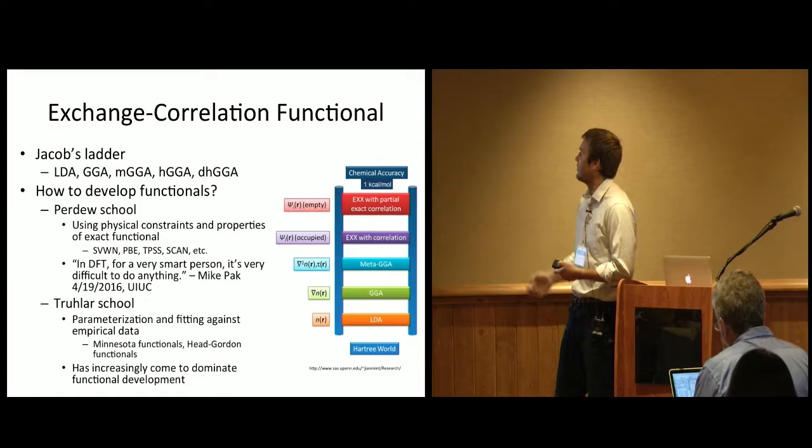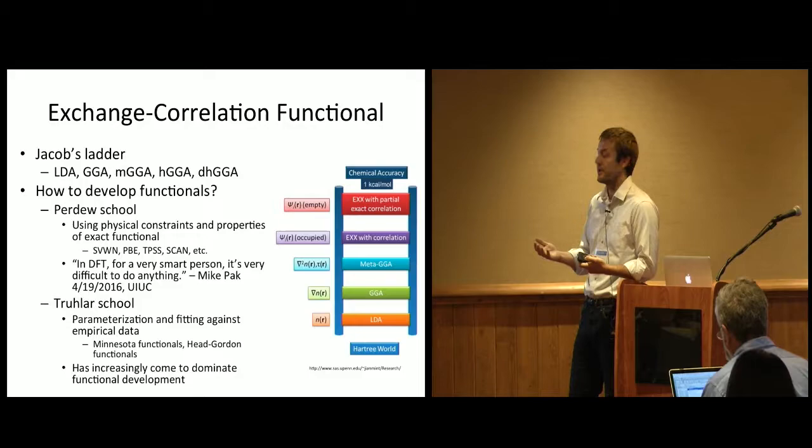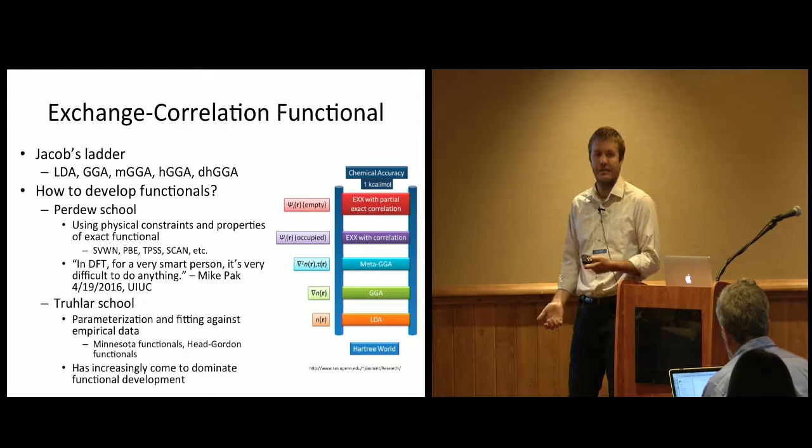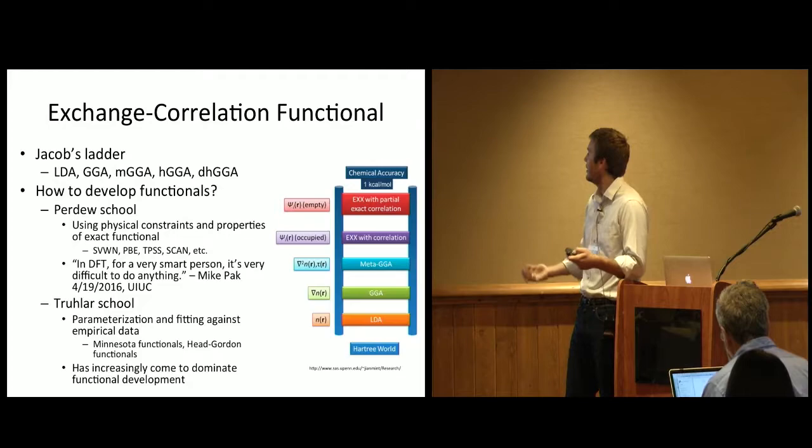While this is an exact theory, the proof of it was a proof of existence, not a proof of construction. No one really knows the exact form of the exchange correlation potential. Really the bulk of DFT research is coming up with new approximations and maybe better approximations for this exchange correlation potential. So how do we do that? We're going to talk about this concept of Jacob's Ladder in DFT. There's a hierarchy of functionals, and they all depend on different inputs. The reason it's called Jacob's Ladder, this comes from John Perdue, and the idea is like in the Old Testament in the Bible, we're climbing up the ladder to reach density functional theory heaven, where at the very top it's the most accurate possible thing we can do.